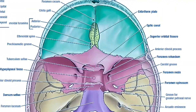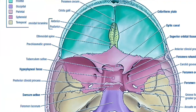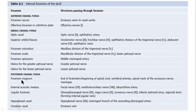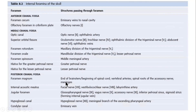Moving to the posterior cranial fossa, it contains the very important foramen magnum. Many structures pass through it: the end of the brainstem at the beginning of the spinal cord, vertebral arteries, spinal roots of the accessory nerves, and the meninges. The internal acoustic meatus contains the facial nerve, vestibulocochlear nerve, and the labyrinthine artery.